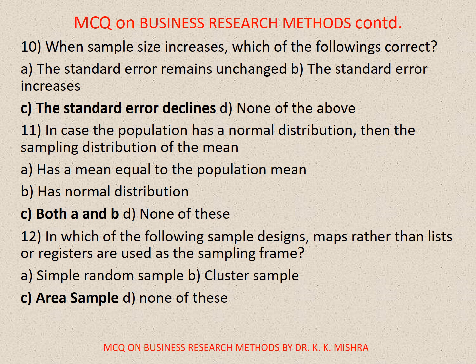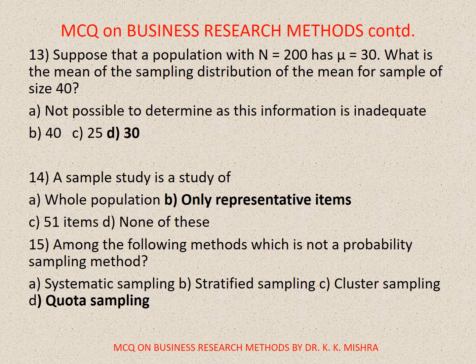Question number 12. In which of the following sample designs are maps, rather than lists or registers, used as the sampling frame? Options are: A. Simple random sample, B. Cluster sample, C. Area sample, D. None of these. Correct option is C. Area sample. Question number 13. Suppose a population with N equal to 200 has mu equal to 30. The mean of the sampling distribution of the mean for a sample of size 14 is 30. Correct option is D.